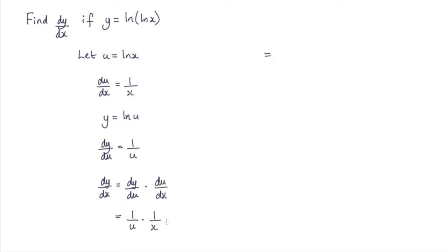So what we have is 1 over u multiplied by 1 over x. And we know what u is — u is log x. So the final answer is 1 over x log x.